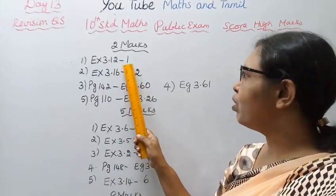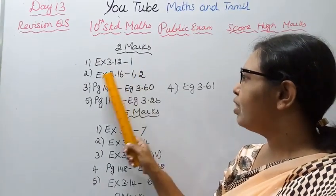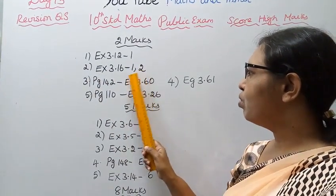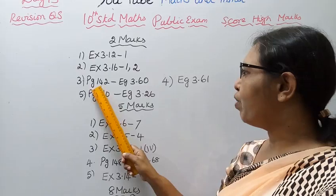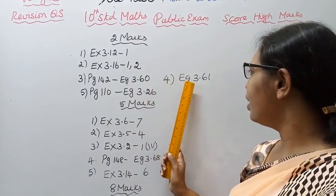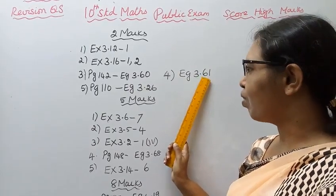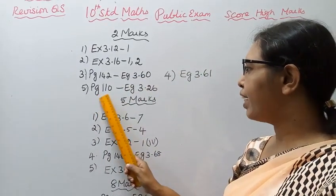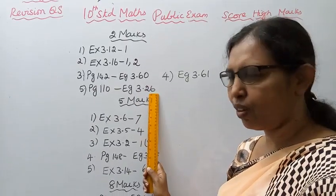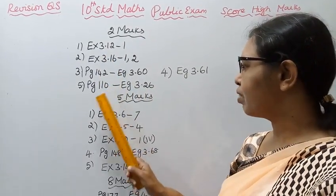For 2 marks: first, Exercise 3.12-1; second, Exercise 3.16, problems 1 and 2; third, page 142, example 3.60; fourth, example 3.61; fifth, page 110, example 3.26.